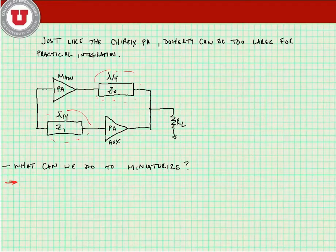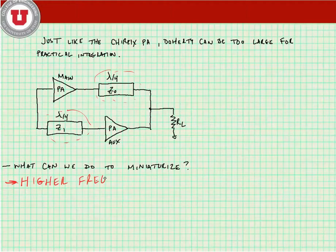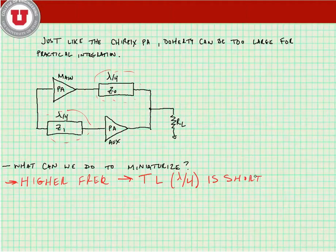One way that we can miniaturize it is to go to higher frequency. The reason we go to higher frequency is that our TL, our quarter-wave TL, is shorter.